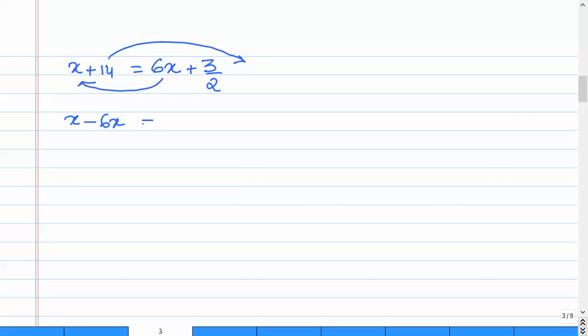So we transpose 6x to the left-hand side and 14 to the right-hand side. So we have x minus 6x. The sign changes because of the transposition. Then 3 by 2 minus 14.